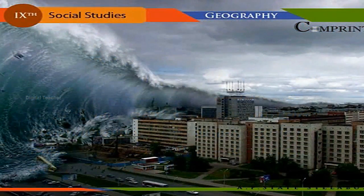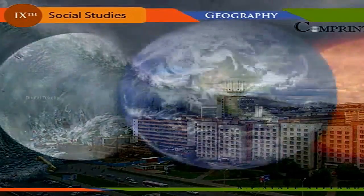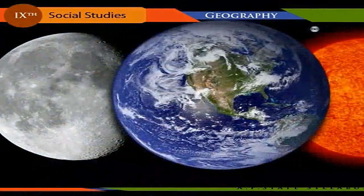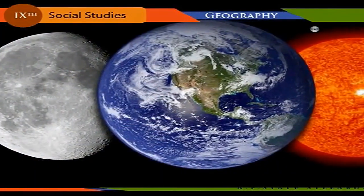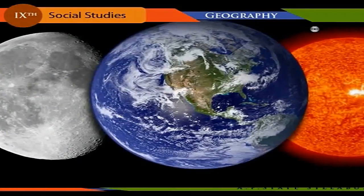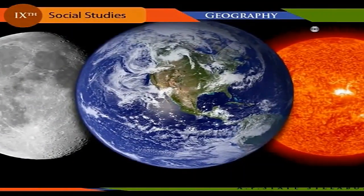Tsunamis, which are sometimes called tidal waves, have no connection with tides. These are mainly caused by earthquakes. The height of the tides varies according to the positions of the Sun and Moon in relation to the Earth.